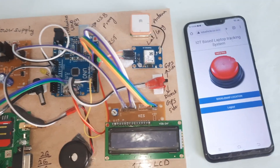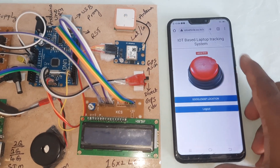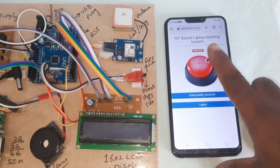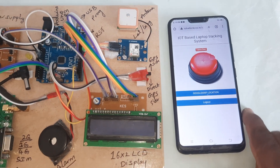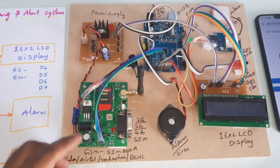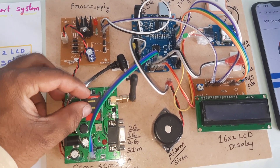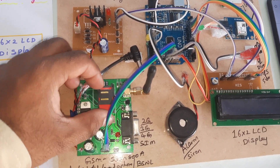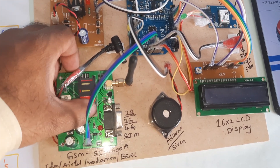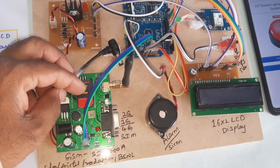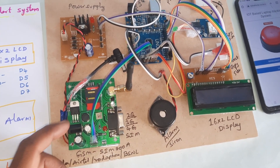We are using a 100 app. Whenever any problem occurs, if you press this button the siren turns on. If nothing should happen, press this and the siren turns off. For the GSM SIM 800A, press downward to open it, insert the SIM card, and lock it.